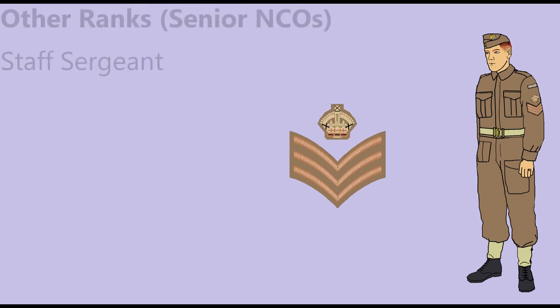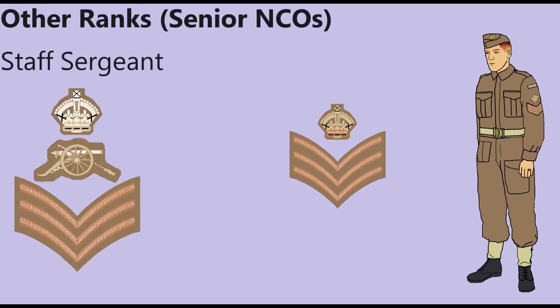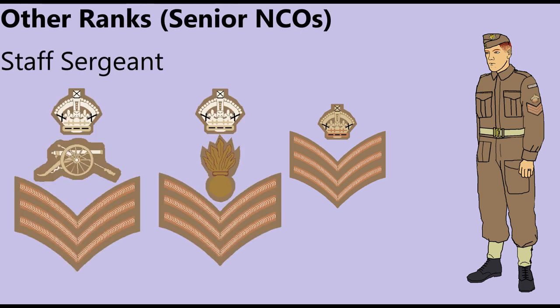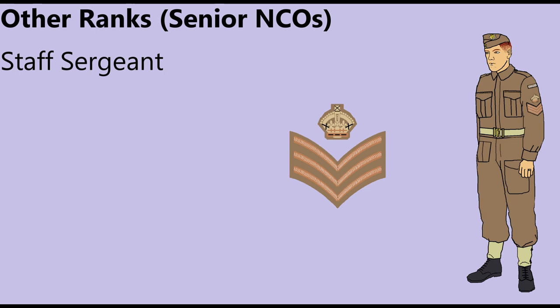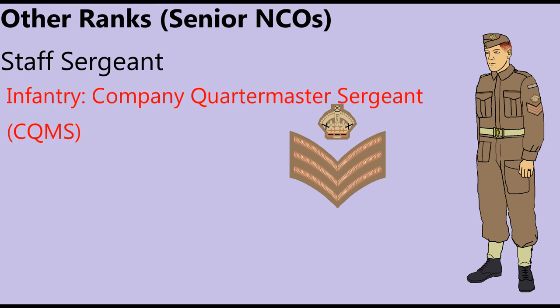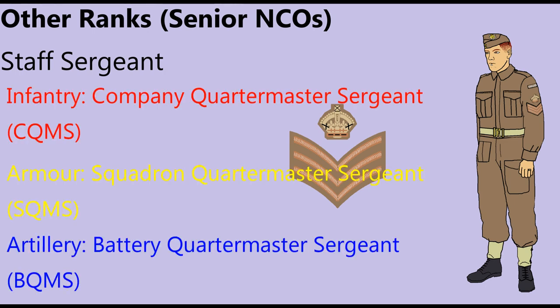A Staff Sergeant wore a crown above the three-bar chevron, as well as an artillery gun or engineer bomb where appropriate. This rank was used to fill very specific appointments, such as Company Quartermaster Sergeant or equivalent in the other services. Staff Sergeants were also used to administer orderly rooms, offices, and workshops.